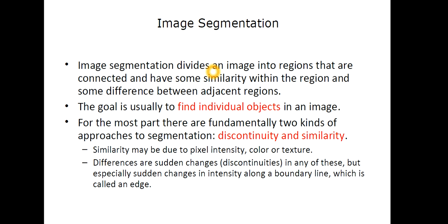There are three important points that you have to note from the definition of image segmentation. When we segment an image, we divide it into different regions and each individual region is known as a segment. While doing so, two properties should be maintained: similarity within the region should be high and similarity among different regions should be less. The goal is to find individual objects in an image.